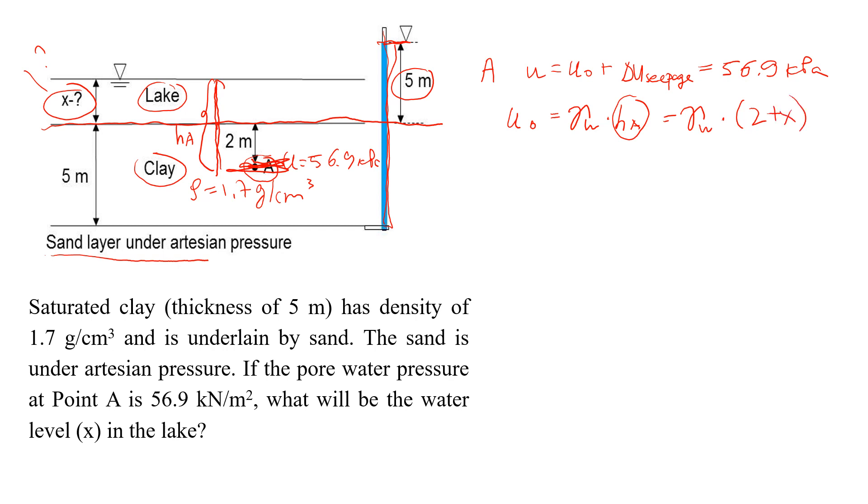And you probably already remember that the unit weight of water is 9.81 kN per cubic meter. So that's the hydrostatic pore pressure.